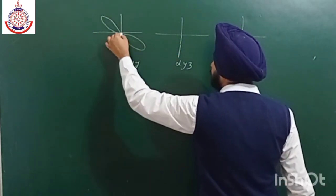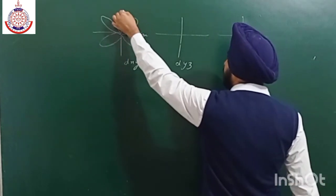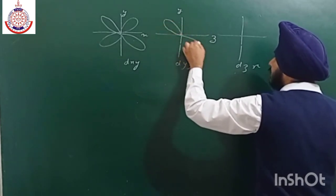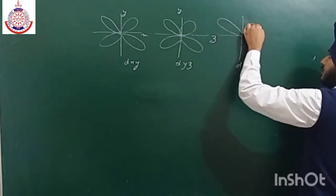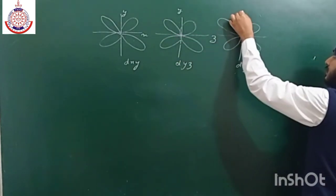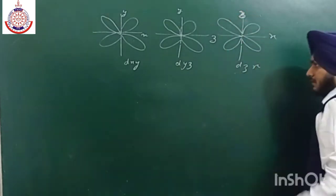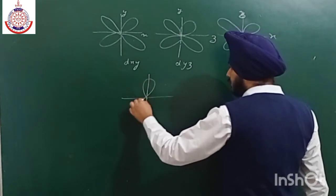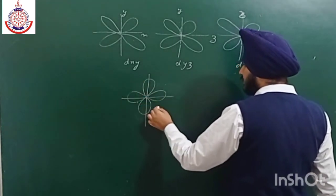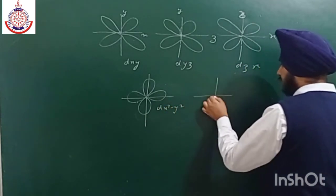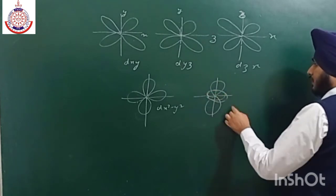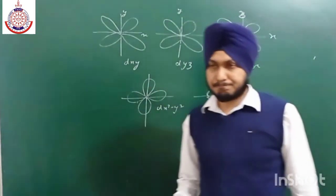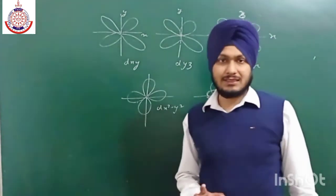The lobes of dxy, dyz, and dzx are in between the axes. For example, assuming x and y axes, their lobes are in between the axes. Similarly for dyz and dzx. But the remaining two orbitals are on the axis: dx²−y² is on the axis, and dz² also has electron density along the z-axis with an annular ring at the center.